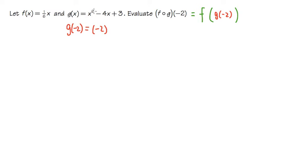We have negative 2 to the second power, and then minus 4 times the x, which is negative 2. And then at the end, we have the plus 3.